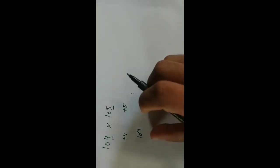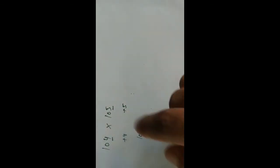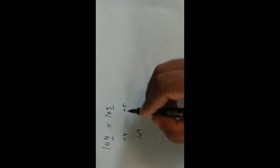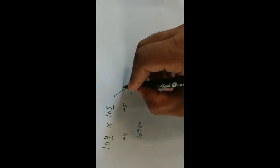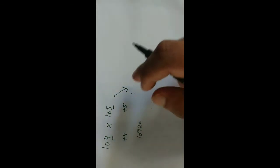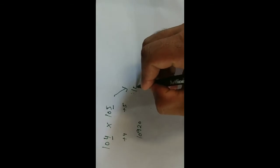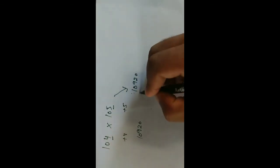After that, what we have to do is we have to just multiply 5 into 4. What is the result of 5 into 4 is equal to 20. So when you multiply it by hand or by calculator you get a result of 10920. This is your answer.